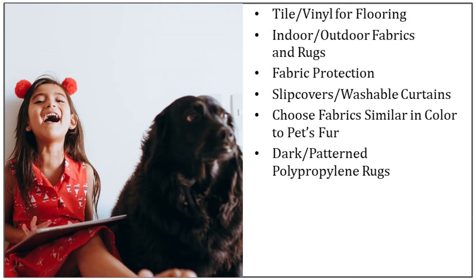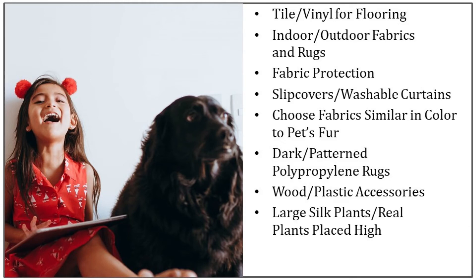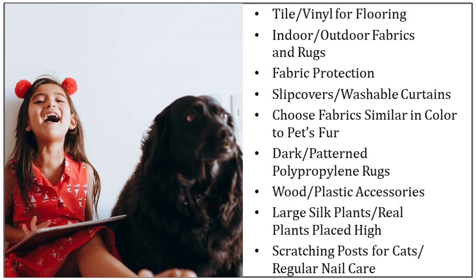For rugs, if you prefer something softer underfoot, look at dark pattern polypropylene rugs, which are generally great at hiding stains. Because they aren't terribly expensive, you can change them out every year or two if needed. For accessories, incorporate non-breakable, lightweight materials such as wood and plastic. If pets are inclined to eat plants, incorporate higher-end silk plants instead, and either go with taller indoor silk trees or place smaller real plants on higher surfaces out of reach. Providing a scratching post for cats and regularly trimming a dog's nails will cut down on damage to soft fabrics. Enzyme sprays can also be purchased or homemade and sprayed on fabrics to deter pets from scratching and biting furnishings. You truly don't have to sacrifice style with small children or pets — you just need to think a little differently.